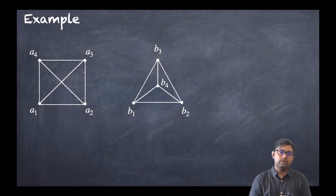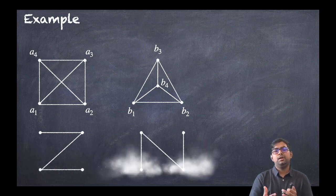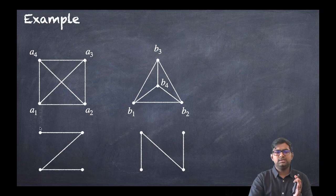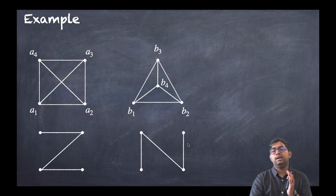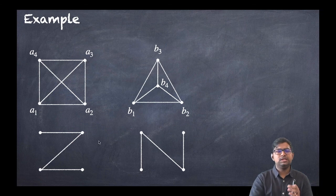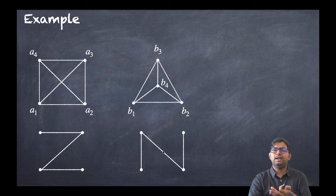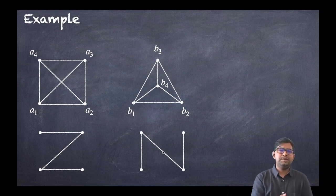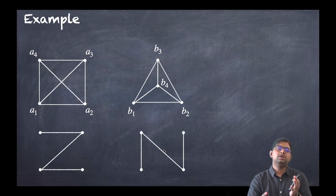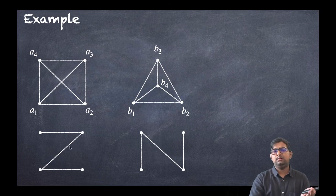Now just imagine stretching b4 upward — the graph becomes a square or rectangle shape. So it is an isomorphic graph. Now let us take another example: consider the letter Z and the letter N. Both have four vertices and three edges each. If you rotate Z by 90 degrees, you get N. So by rotating or shifting vertices you get the same graph — it is obviously an isomorphic graph.